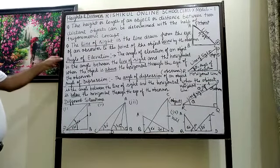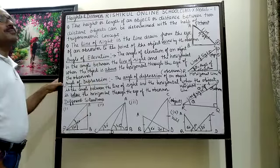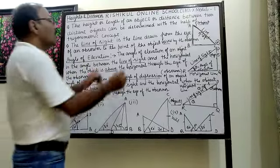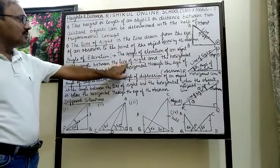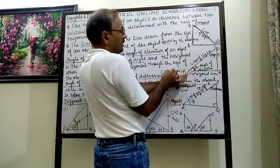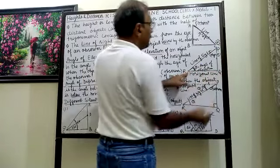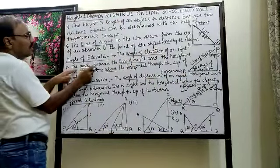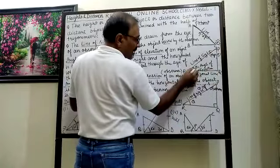Now, these two terms — angle of elevation and angle of depression — are very important in this chapter. The angle of elevation of an object is the angle between the line of sight and the horizontal. At point R is the observer and at point P is the object. The angle between the line of sight and the horizontal is called the angle of elevation.